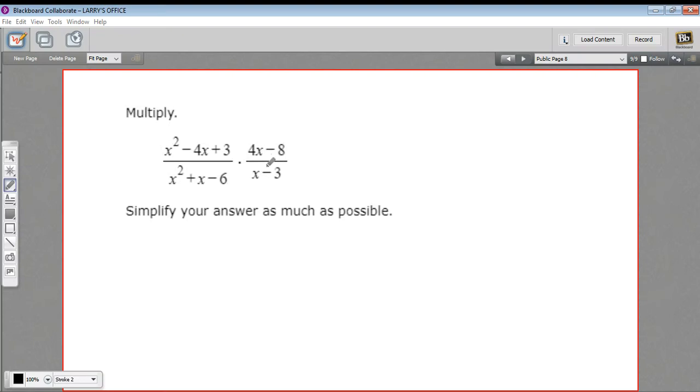In this problem we have a couple of rational expressions that are being multiplied together and this looks like it could get really complicated really fast. So I would advise you not to jump into trying to multiply the top and multiply the bottom, which you might normally do if you're multiplying fractions together.